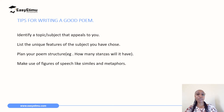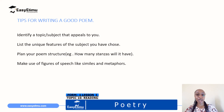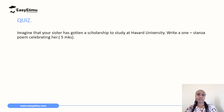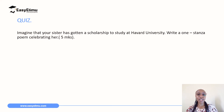You can actually attempt to write a poem using those tips — have them in mind before you start. And that's it for this session. I hope you're now able to identify the unique features that distinguish poems from other forms of writing. For further practice, have a look at the quiz and attempt it: imagine that your sister has gotten a scholarship to study at Harvard University — write a one-stanza poem celebrating her. If writing about your sister, write down some things you like about her, then congratulate and celebrate her. Thank you for tuning in and see you in the next class.